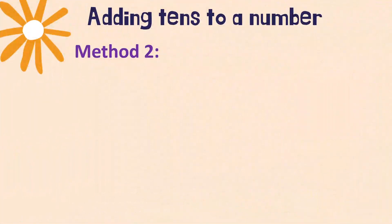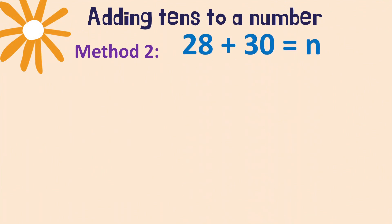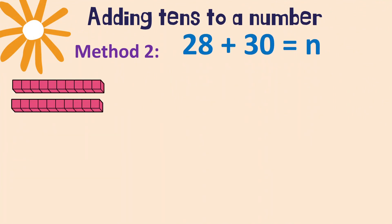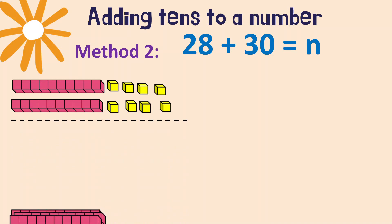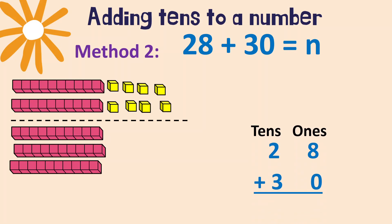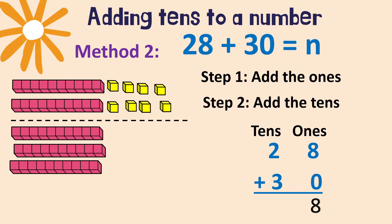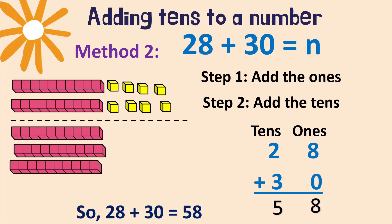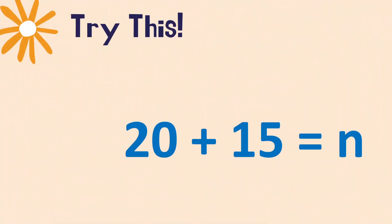Now let's try using blocks. Represent 28: two tens and eight ones. We add three tens, 30, and zero ones. Write the numbers in vertical form. Add the ones: eight plus zero is eight. Add the tens: two plus three is five. As you can see in the blocks, we have five tens and eight ones — so 28 plus 30 equals 58. Very good!